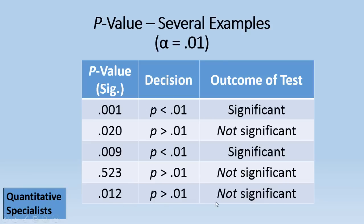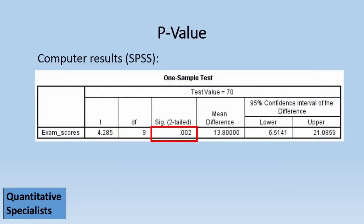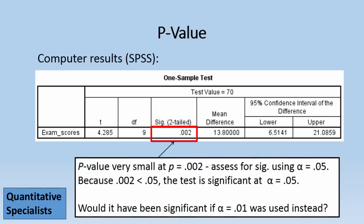Okay, let's look at a p-value again in SPSS. So now we have a p of .002, and it's very small. Let's assess this for significance using alpha .05. So because .002 is less than .05, the test is significant at alpha .05.